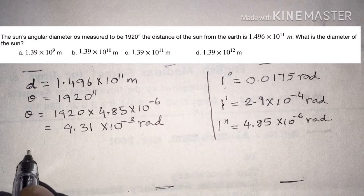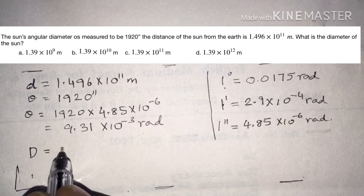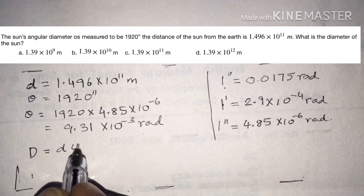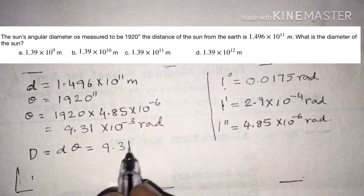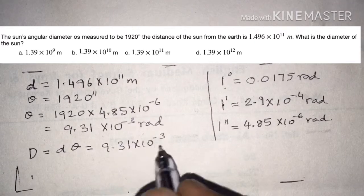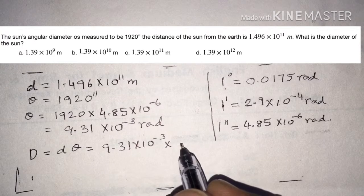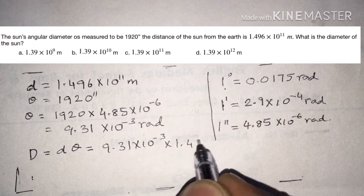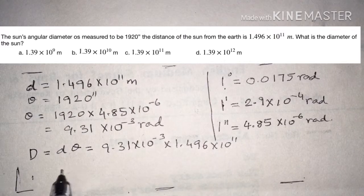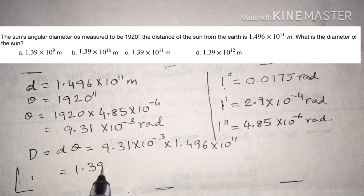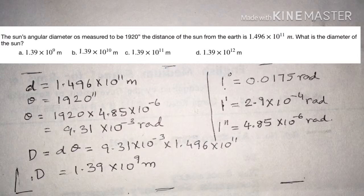The diameter D of the sun equals distance d multiplied by theta. Substituting: 9.31 into 10 power minus 3 multiplied by 1.496 into 10 power 11 gives 1.39 into 10 power 9 meters. The correct answer is option A.